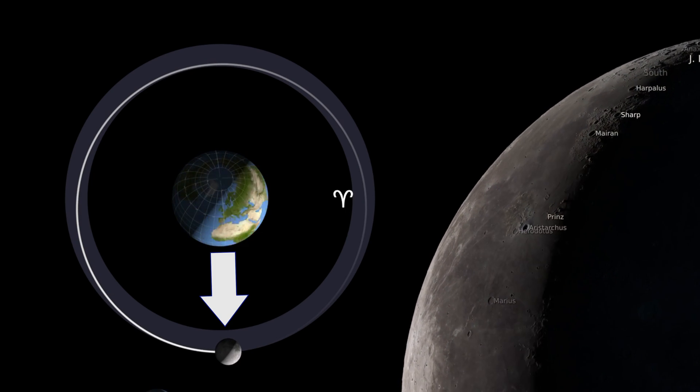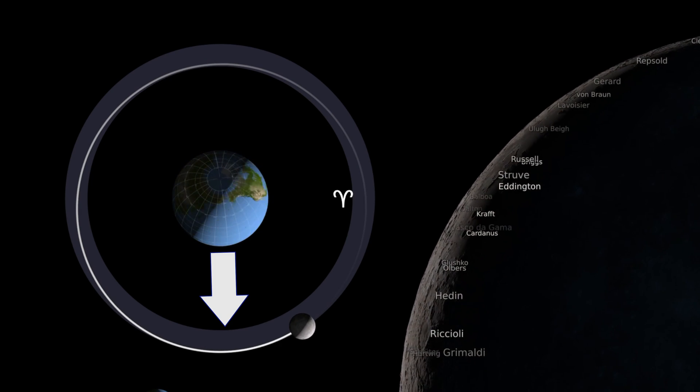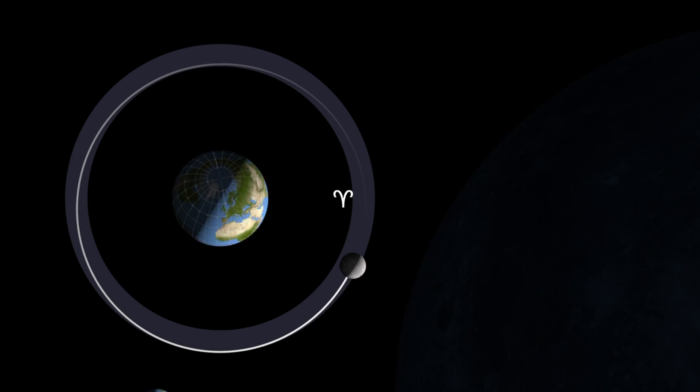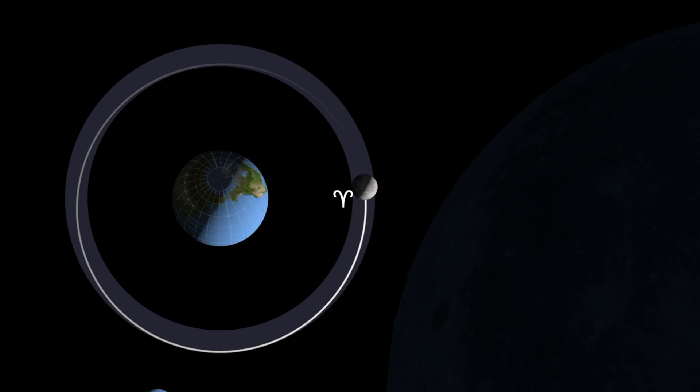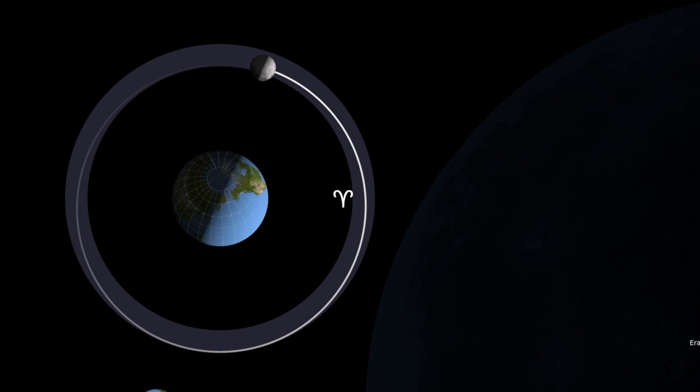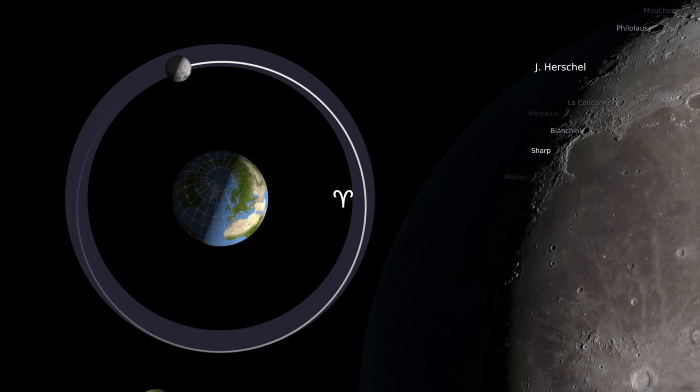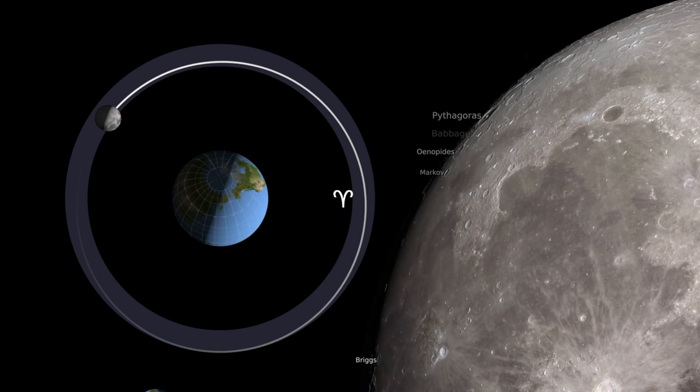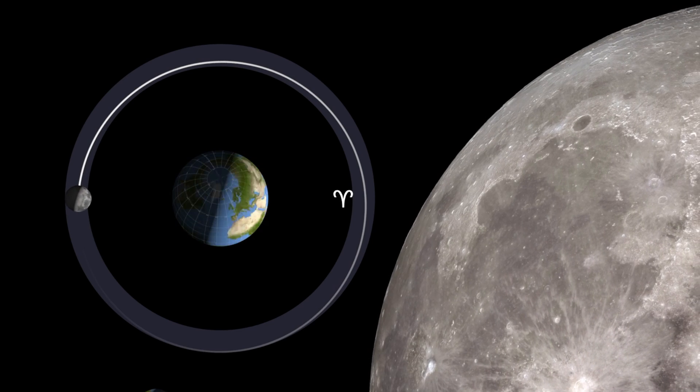Now notice the white line that's following the moon is where the moon used to be and you can see that it's going from inside to outside on this gray line, denoting that the moon's orbit is not a perfect circle. It's more of an ellipse, which is very cool.